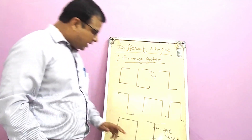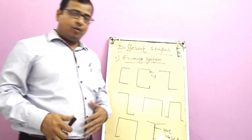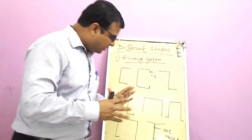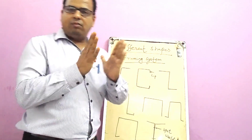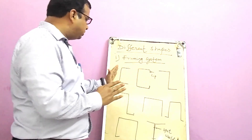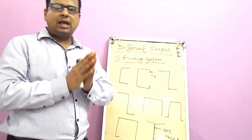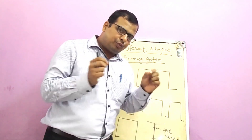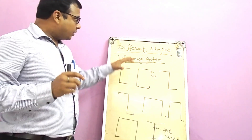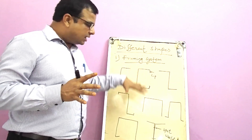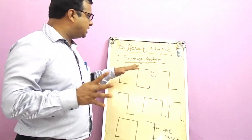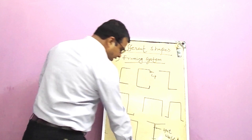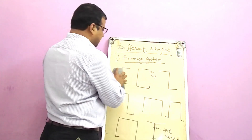If we require an I-section, we generally combine two channel sections and then provide spot welding to join them. These are the different shapes generally used in framing systems.